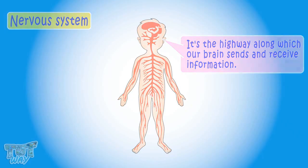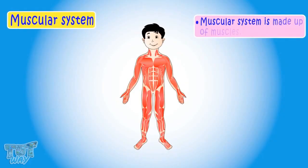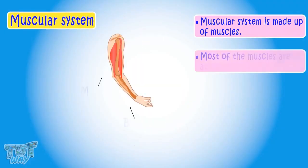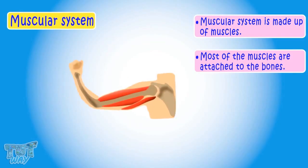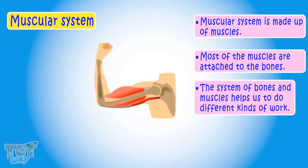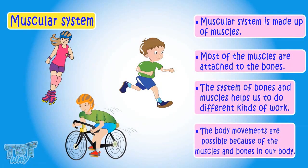Now let's learn about the muscular system. The muscular system is made up of muscles. Most of the muscles are attached to the bones, and bones and muscles work together. The system of bones and muscles helps us to do different kinds of work. All the body movements are possible because of muscles and bones in our body.